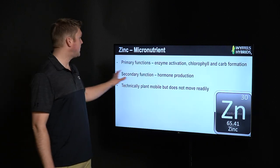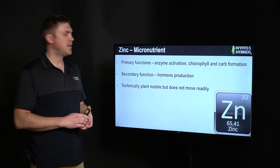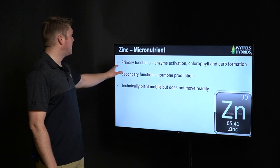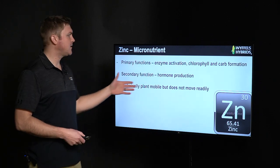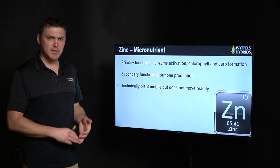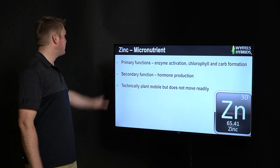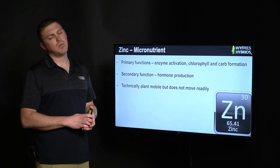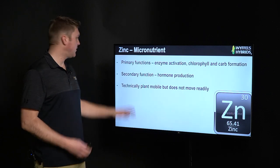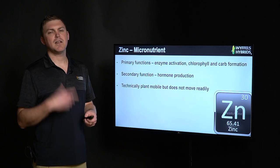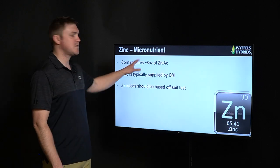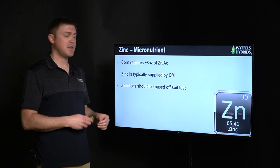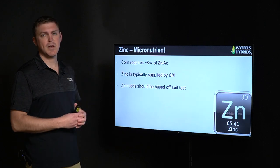The next nutrient we're talking about today is zinc. Zinc is a micronutrient — we use much less of it compared to things like nitrogen and sulfur. Primary functions of zinc are enzyme activation and chlorophyll and carbohydrate formation within corn plants. A secondary function is some regulation in hormone production. Technically this nutrient is plant mobile; however, it doesn't move very easily within the plant — it can move up and down in the xylem and phloem. A typical corn crop only requires about eight ounces of actual zinc per acre, much less than the 24 pounds of sulfur.